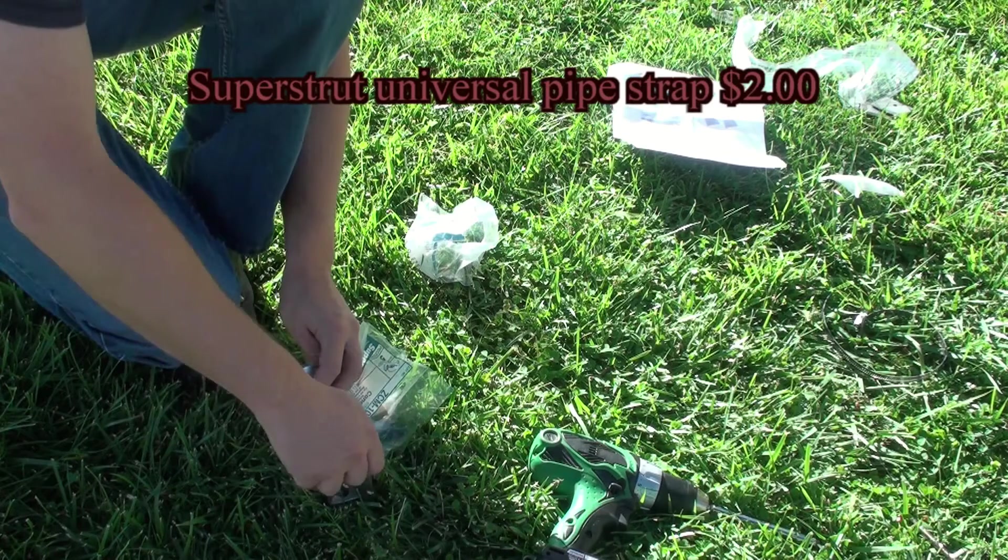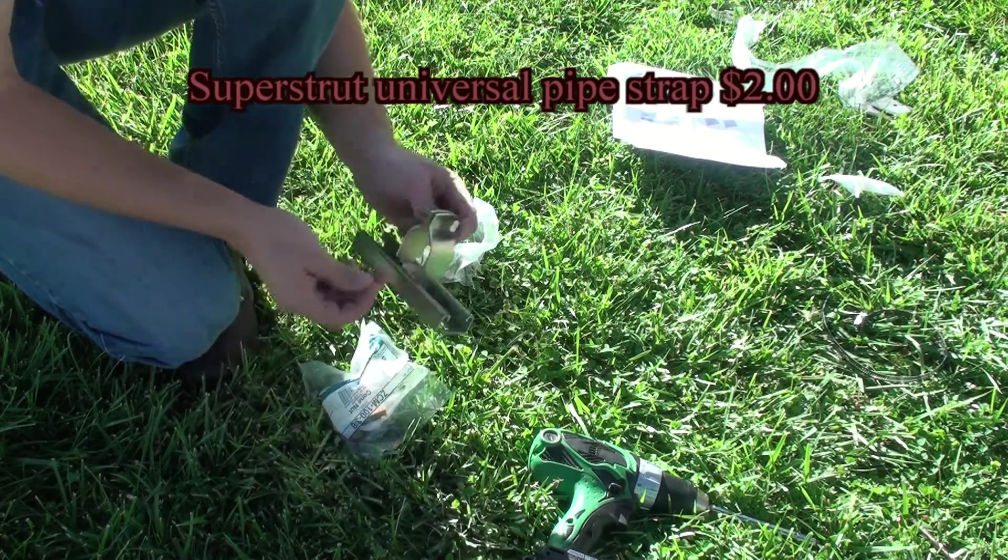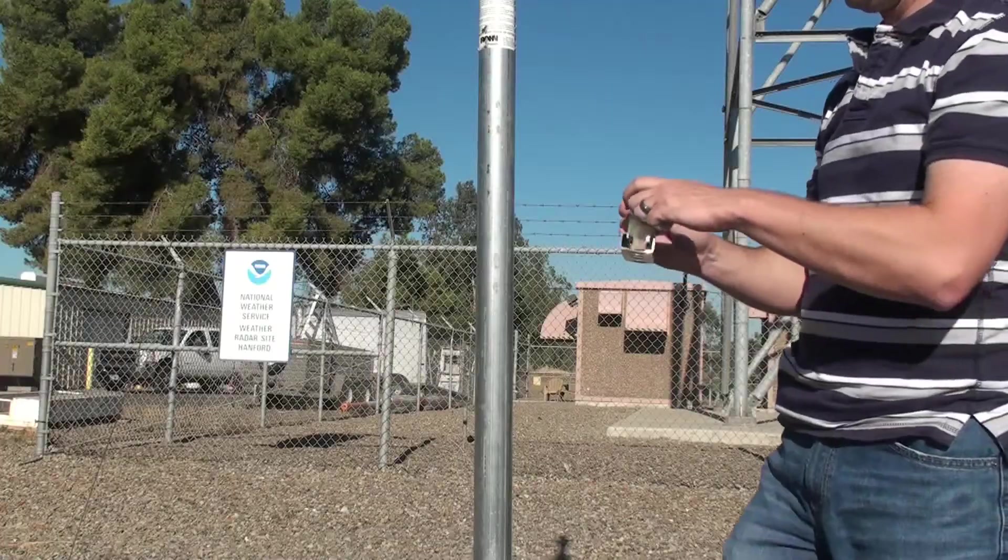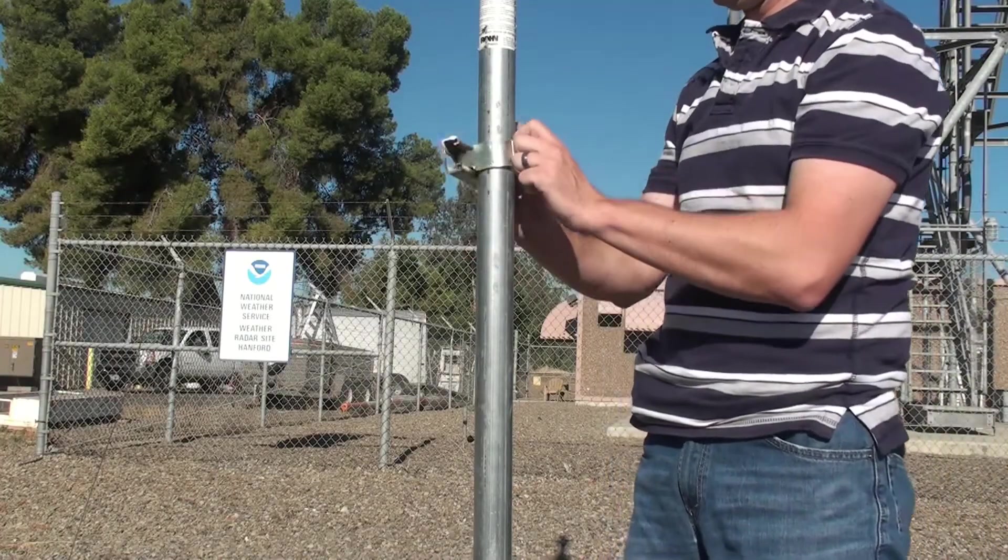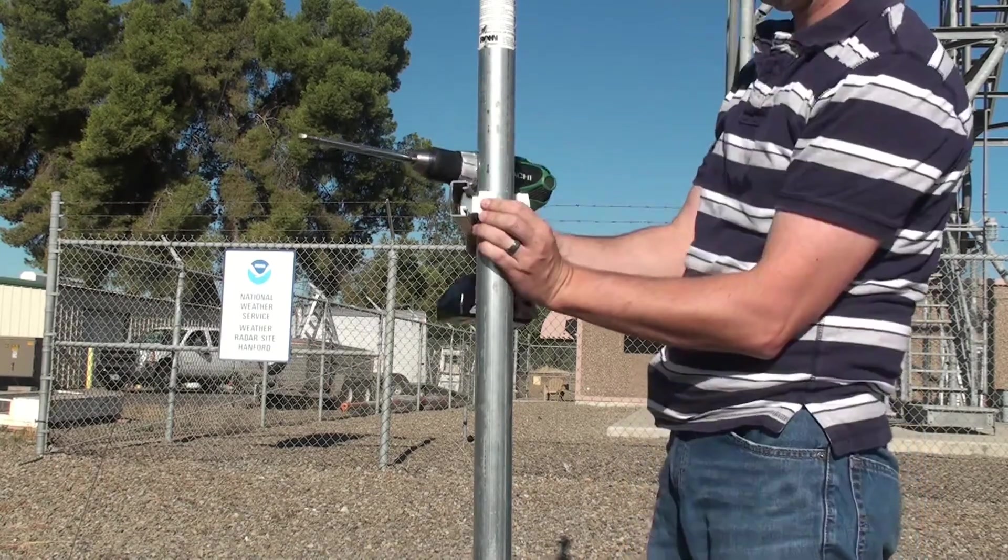Now we can unpack the super strut pipe strap. This will hold the super strut to the telescoping mast. It's time to start attaching the solar panel hardware to the mast. Start by loosely securing both super strut pipe straps around the mast.